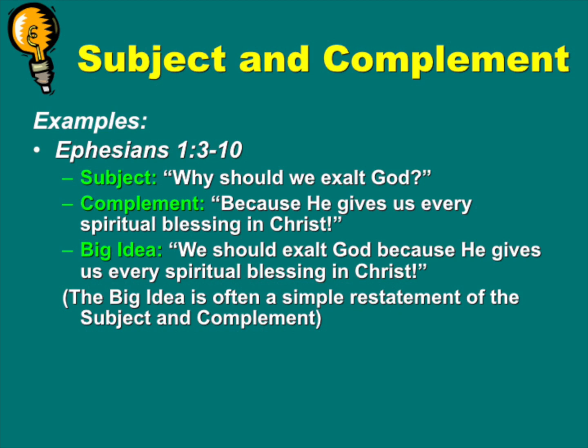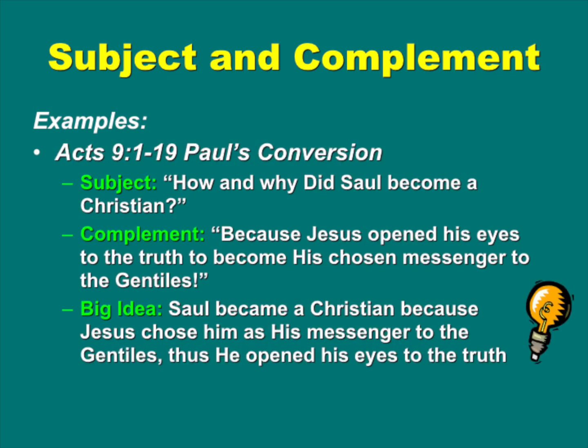The big idea is often a simple restatement of the subject and the complement. Another example is Acts 9:1-19, about Paul's conversion. The subject is: how and why did Saul become a Christian? The complement is: because Jesus opened his eyes to the truth to become his chosen messenger to the Gentiles. And the big idea is: Saul became a Christian because Jesus chose him as his messenger to the Gentiles, and thus he opened his eyes to the truth.